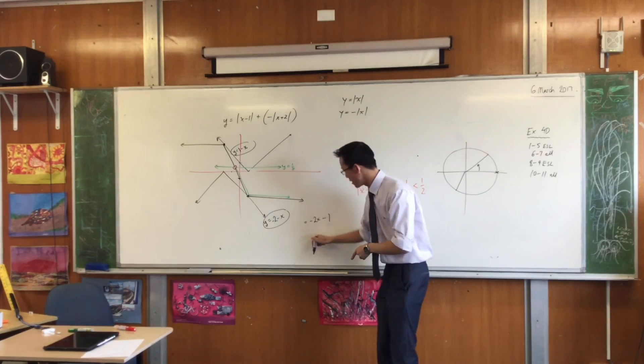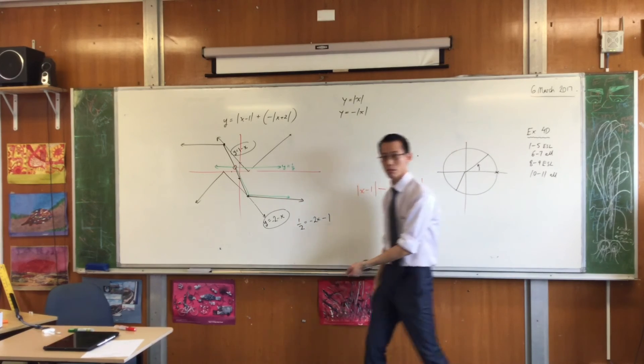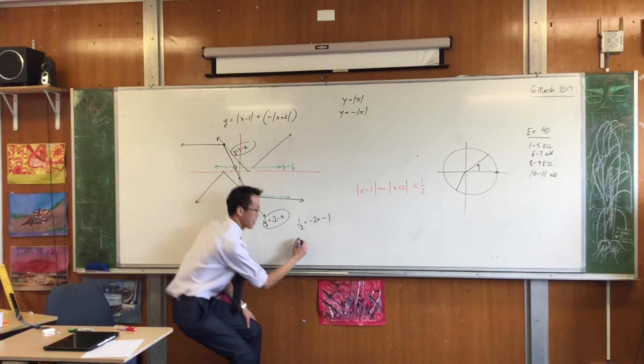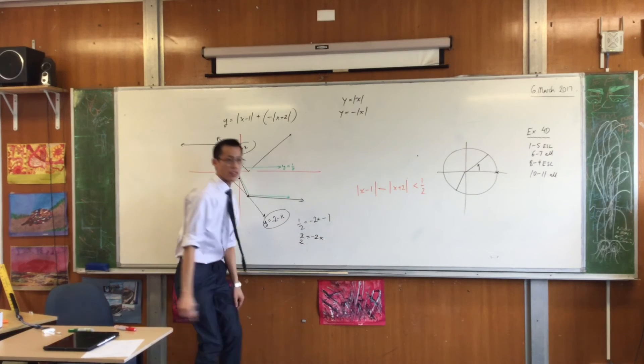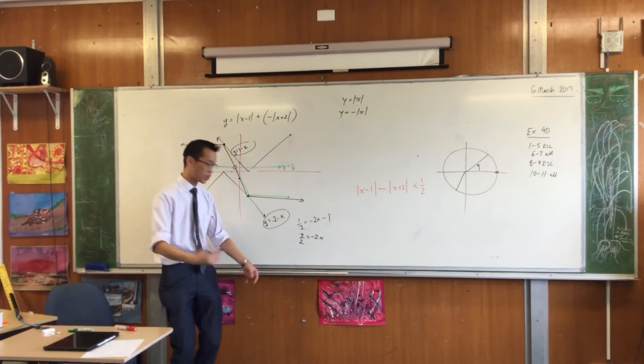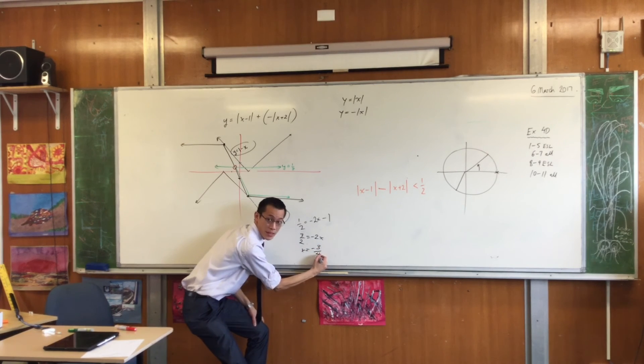I just need to know when it intersects with half, so can you tell me what to do? Okay, I'll add 1 to both sides, which is going to make this 3 on 2, and it leaves a negative 2x over there. Now what? I will divide both sides by negative 2, which I believe gives me negative 3 quarters. Are you happy with that?